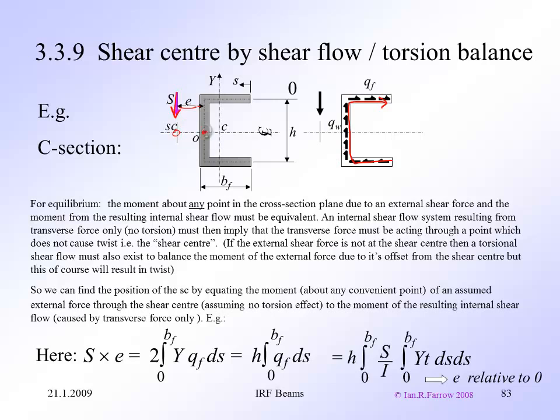So taking moments about this point on the web, the moment S times E has to be equal to the sum of the moments in the top and bottom of the C section here. The web doesn't have any contribution because it's going through our reference point. So that's two sections at the top and the bottom times the shear flow in the flanges times the Y distance integrated across the breadth of that flange with respect to S, our distance around the section.